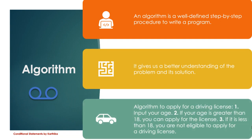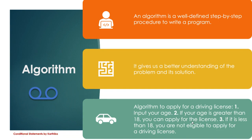Here I've taken the algorithm to apply for a driving license. When writing an algorithm you write it step 1, step 2, step 3, one by one. Step 1: input your age, because we have to get input from the user to check eligibility. Step 2: if the age is greater than 18, the candidate is eligible and can apply for a driving license. Step 3: if it is less than 18, you are not eligible — tell the candidate they are not eligible because their age is less than 18.